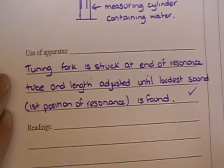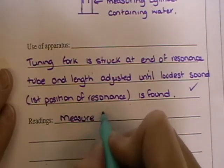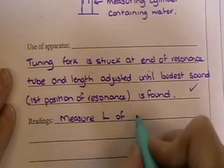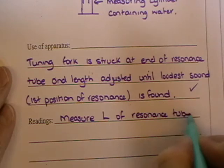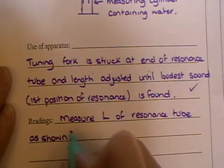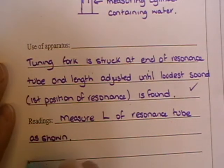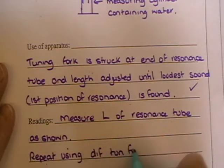The readings then that you have to get, you have to measure the length of resonance tube as shown. And then you would repeat using different tuning forks of known frequency.